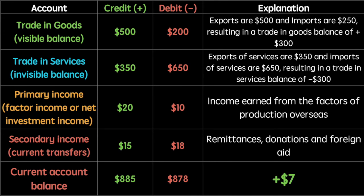The current account balance is equal to the total of the credit column minus the total of the debit column. The total balance would result in a positive, negative, or zero current account balance. For this simple example, there is a positive current account balance of $7. Therefore it can be said that this economy is experiencing a current account surplus. If the answer were negative, the economy would be running a current account deficit.